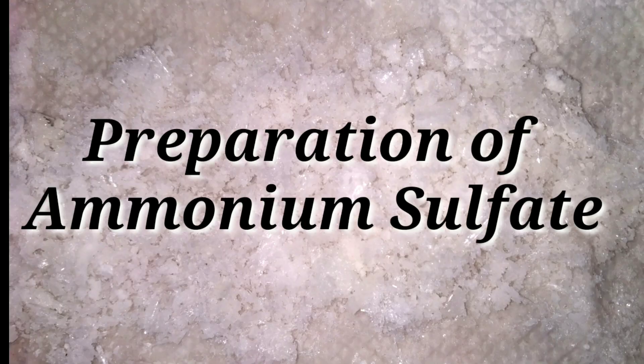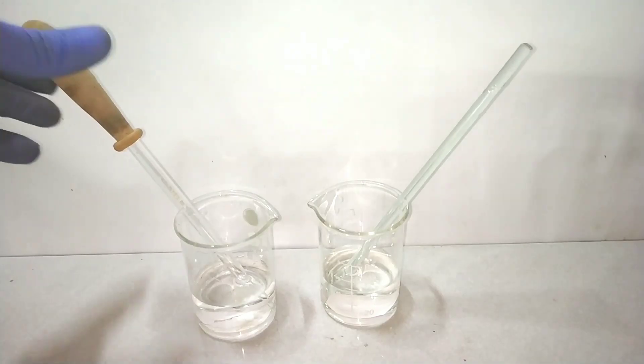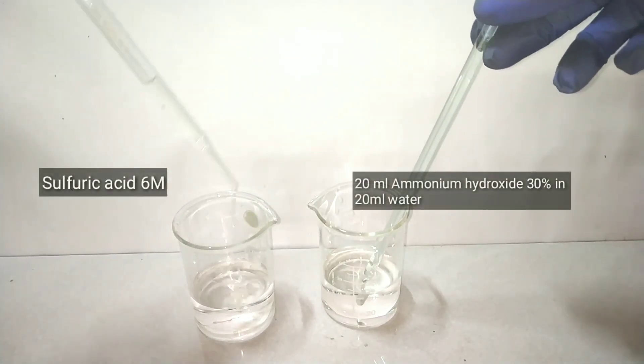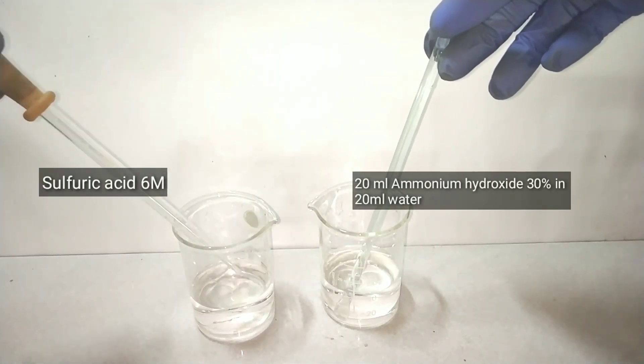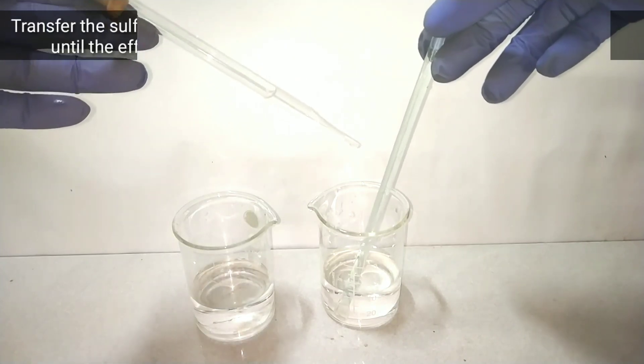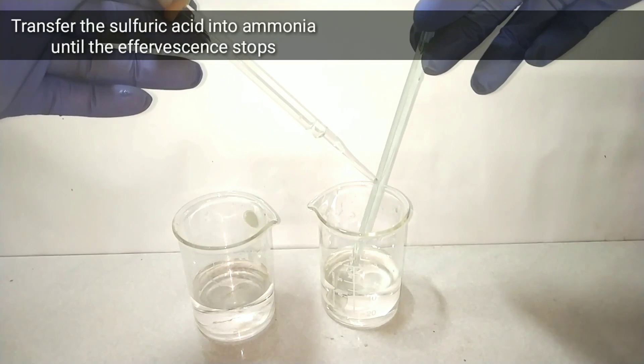Now we will be preparing the ammonium sulfate. This preparation is just a neutralization reaction with ammonium hydroxide and sulfuric acid. I will continue adding the sulfuric acid into the ammonium hydroxide until the bubbles stop forming.